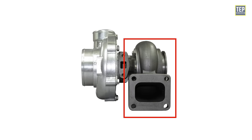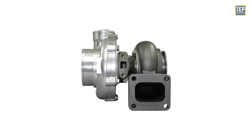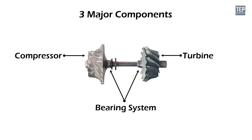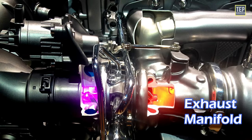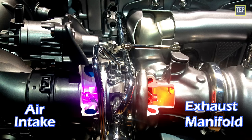Breaking it down further, it has a hot side and a cold side. At the most basic level, a turbocharger consists of three major components: the turbine, located at the hot side; the compressor, located at the cold side; and the bearing system that supports the turbine shaft, connecting the turbine and compressor wheels together. One side of the turbo is bolted onto the exhaust manifold of the engine, and the other side at the engine's air intake.